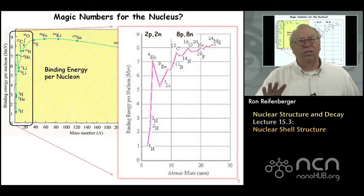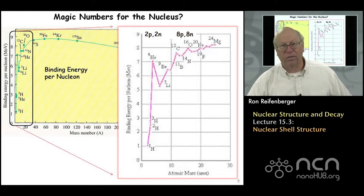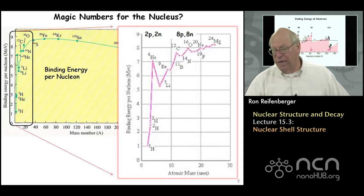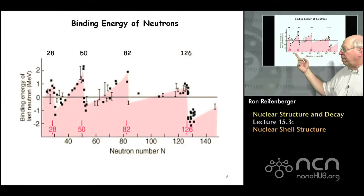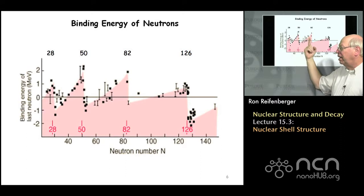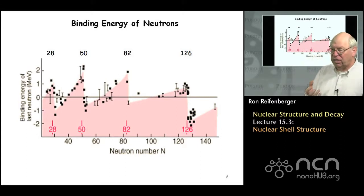There have been a large number of studies looking for conditions in which the binding energy of various nuclei are large. This particular chart plots the neutron number in a nucleus against the binding energy of the last neutron in that nucleus. You can see peaks in this binding energy at neutron numbers 28, 50, 82, and 126 — an indication that whenever a nucleus has 28, 50, 82, or 126 neutrons, it has achieved a very stable configuration.